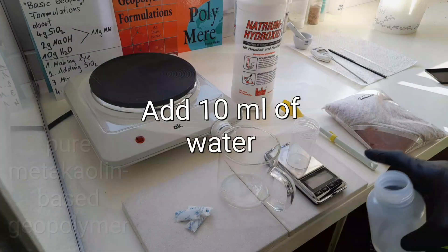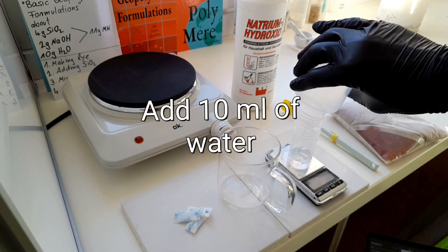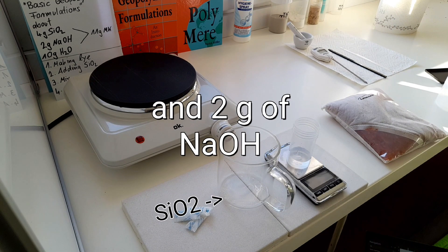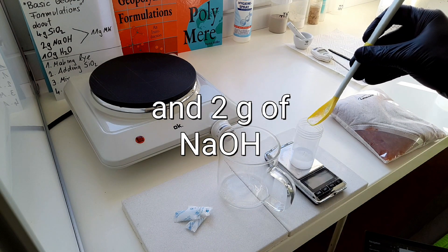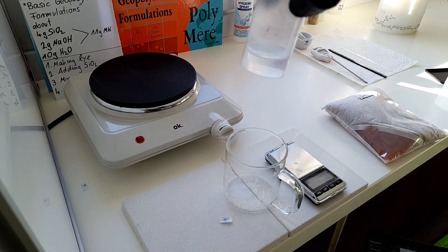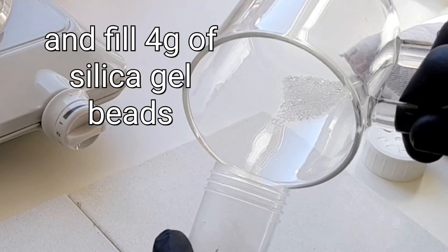We add 10 milliliters of water and then we add 2 grams of sodium hydroxide to our sodium hydroxide solution and fill in our silica gel beads.